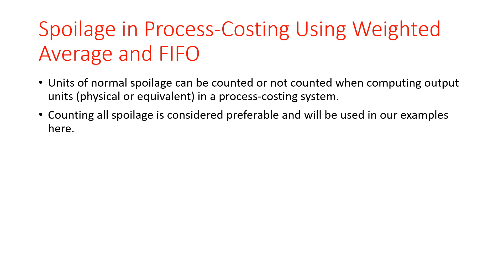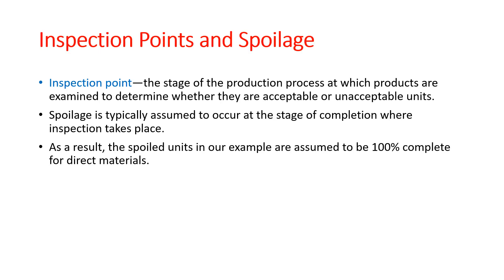Spoilage in process costing uses the weighted average and the first-in, first-out methods. Units of normal spoilage can be counted or not counted when computing output units — the physical and the equivalent ones — in a process costing system. Counting all spoilage is considered preferable. The inspection point is the stage of the production process at which products are examined to determine whether they are acceptable or unacceptable units. Spoilage is typically assumed to occur at the stage of completion where inspection takes place.